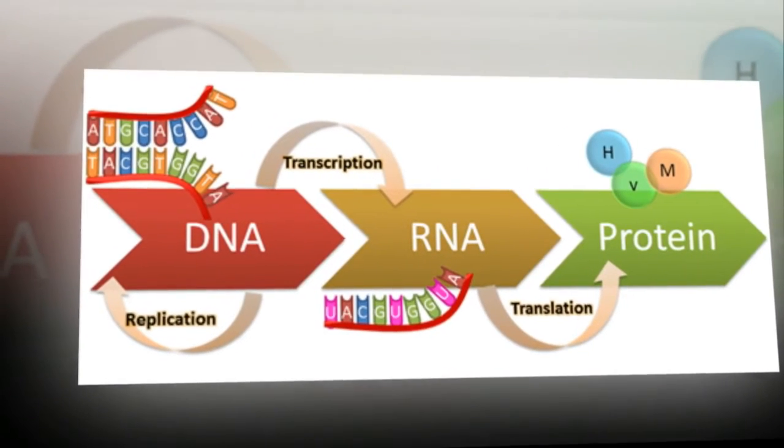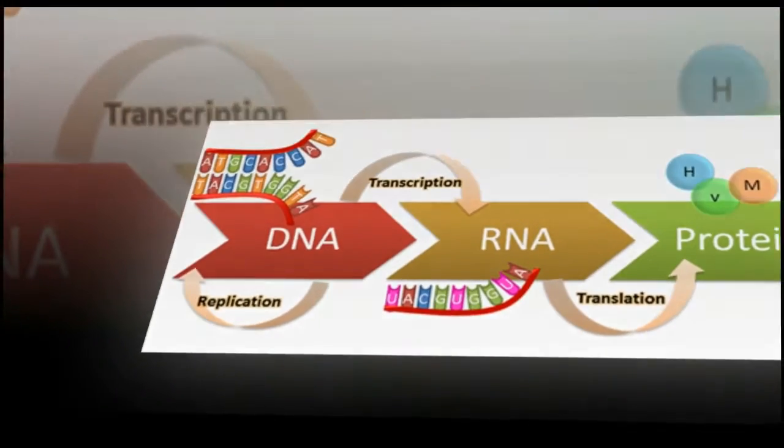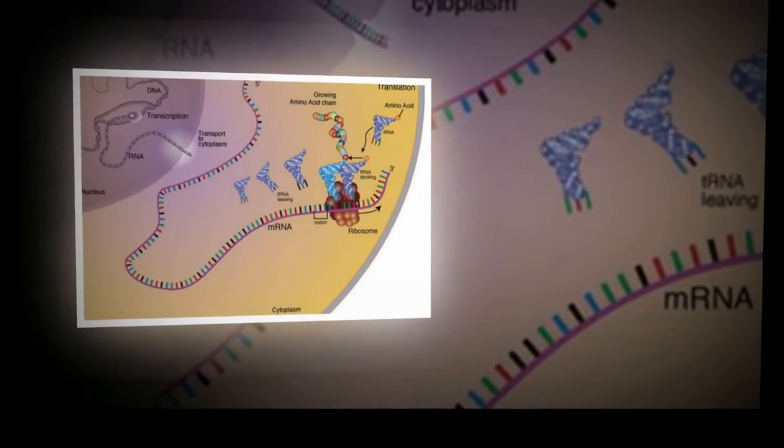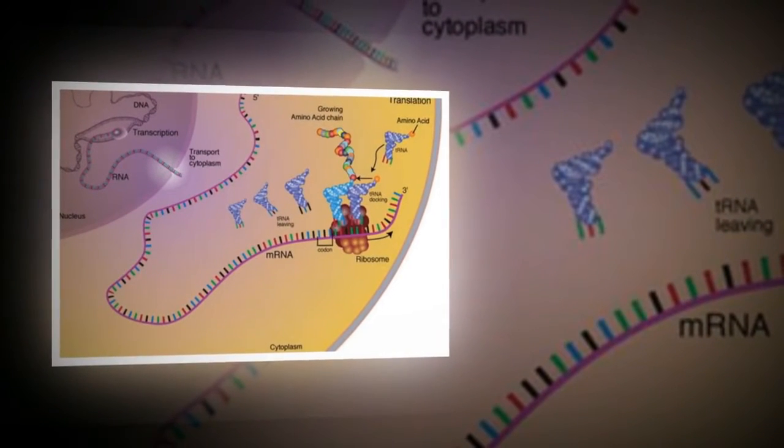This strand will be copied into messenger RNA, mRNA, when the mRNA is organized so that it is made up of the opposite amino acids to those present in the DNA section being copied.